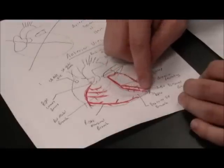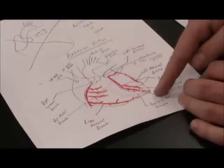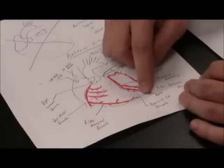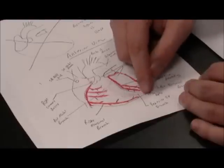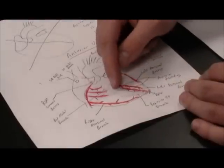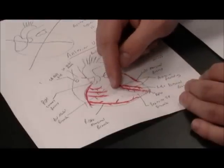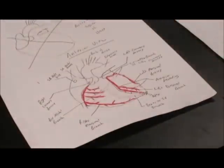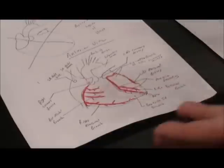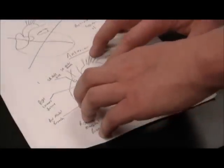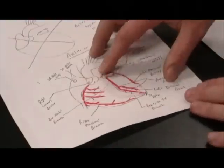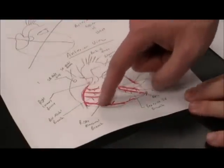The anterior descending artery travels all the way down to the apex of the heart, wraps around the apex, and travels up the posterior side along the interventricular septum. It will anastomose — connect — with the descending artery of the right coronary artery. This concludes the anterior aspects of the coronary circulation: two major coronary arteries originating in the sinus just above the aortic valve, forming many branches that supply the atria and ventricles.